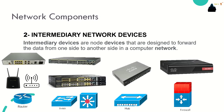We also need intermediary network devices between end devices. Intermediary network devices connect individual terminals to the network and can connect several individual networks to form an internetwork. They provide connectivity and guarantee data flow throughout the network. Examples include routers, switches, multi-layer switches, layer 2 switches, hubs, and firewalls.